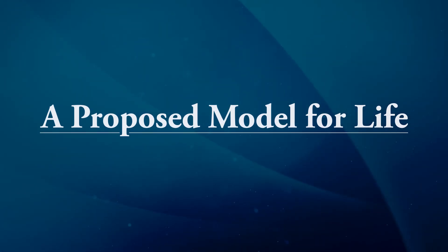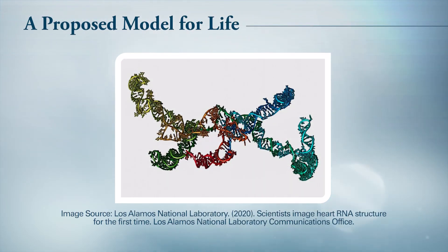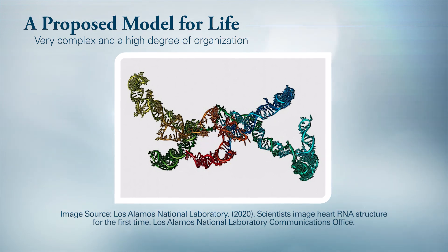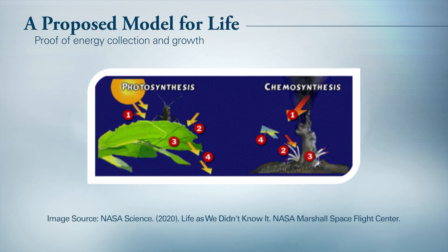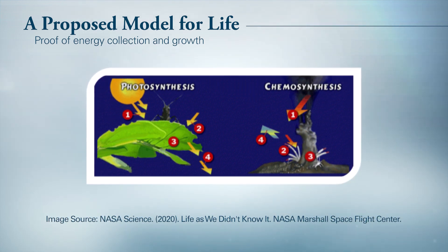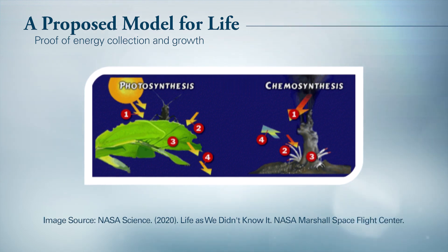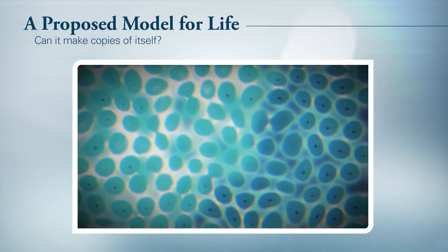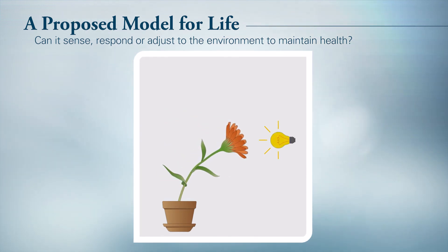After all this time, you're probably curious about comparing your model to other students. I don't have a specific student's model to show you, but what I can do is show you a basic model that a biologist might use — the types of things that they would be looking for as they hunt for signs of life. First, the object needs to be very complex with a high degree of organization, and this is true regardless of whether it's very small or very large. Second, they'd be looking for evidence of the object collecting and using energy to grow. This is called metabolism, and that can include food breakdown like digestion, or food synthesis like we see with plants which make their own food using energy from the sun. Third, can the object make copies of itself — what we would commonly refer to as reproduction? And finally, they would be looking to see whether the object can sense, respond, or adjust to its environment in order to regulate itself and maintain its health.